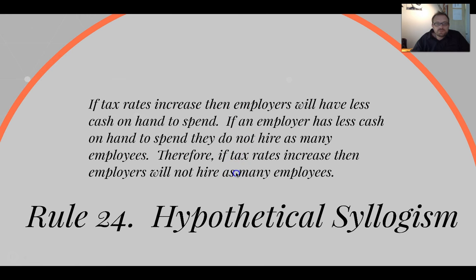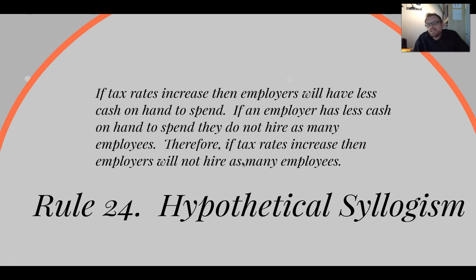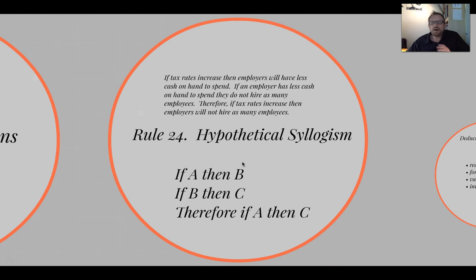Here's an example: If tax rates increase, then employers will have less cash on hand to spend. If an employer has less cash on hand to spend, they do not hire as many employees. Therefore, if tax rates increase, then employers will not hire as many employees. You hear this argument a lot, especially by politicians worried about tax rate increases. This is a hypothetical syllogism, and it's completely valid — if the first conditional statement is true and the second conditional statement is true, it follows necessarily that the third conditional statement is also true. You can remember it by thinking of a hypothesis — an argument that brings together hypothetical types of statements.